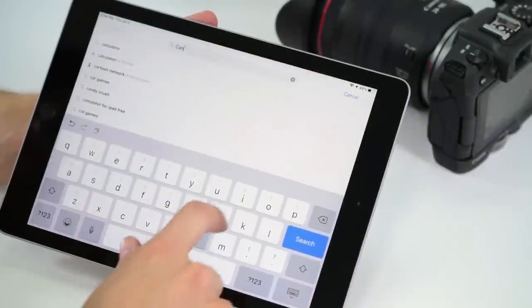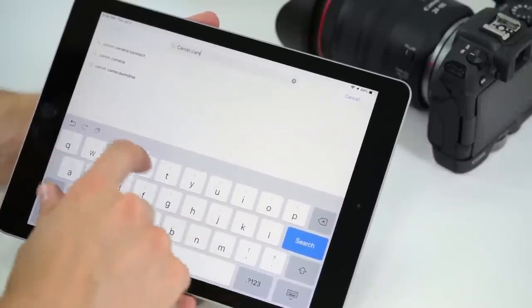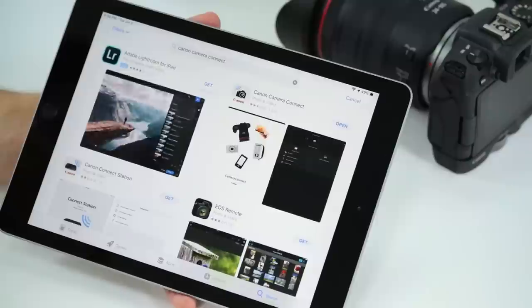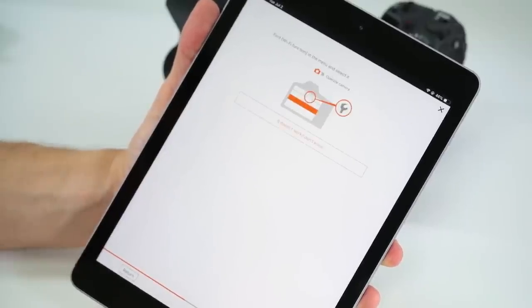So the first thing you're going to want to do is download the Canon Connect app. It's compatible for iOS or Android devices. Connecting to your mobile device is really easy, and I recommend using Canon's Easy Connection Guide. Once you've followed all the steps, you're ready to use some of the cool and advanced features found in this app.